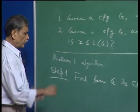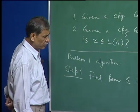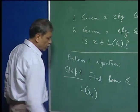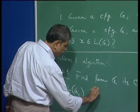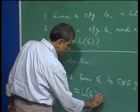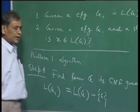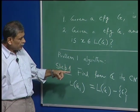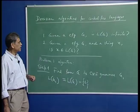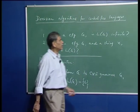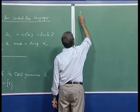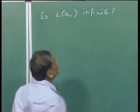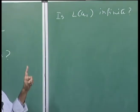We know from the definition of Chomsky Normal Form that the grammar G1 we obtain will generate the language L(G) except possibly the empty string, because the Chomsky Normal Form grammar cannot generate the empty string. So clearly G generates an infinite set if and only if G1 generates an infinite set. Therefore, we will look at whether L(G1) is infinite, where G1 is in Chomsky Normal Form.